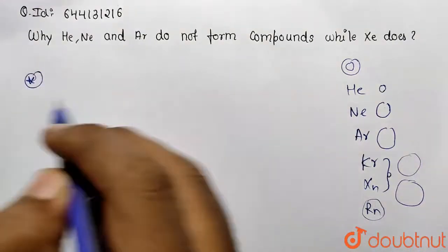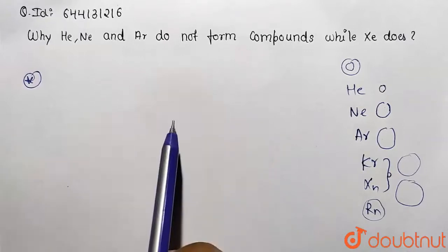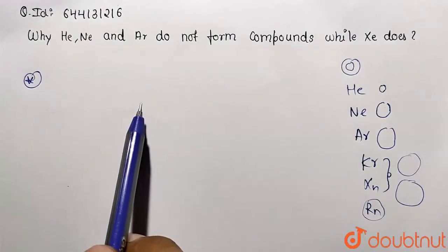We can mention the answer over here. The reason is the electrons are loosely bound and they are capable of forming compounds with most electronegative elements like fluorine and oxygen.